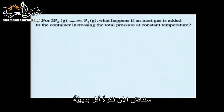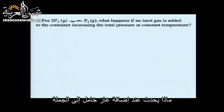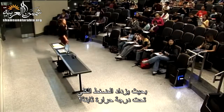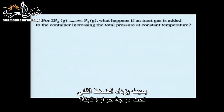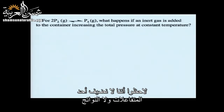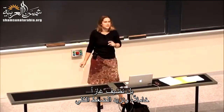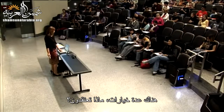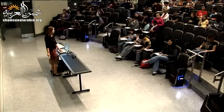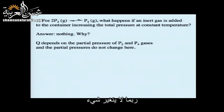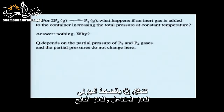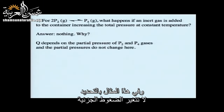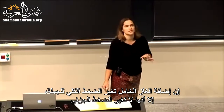Now let's get a little trickier. What happens if we add an inert gas to a system, increasing the total pressure at constant temperature? We're not adding one of the reactants or products — we're adding an inert gas and increasing total pressure. The answer is nothing happens, because Q depends on the partial pressure of the reactant gas and product gas. In this example, the partial pressures are not changing. We are changing total pressure by adding an inert gas, but we're not changing the partial pressures.